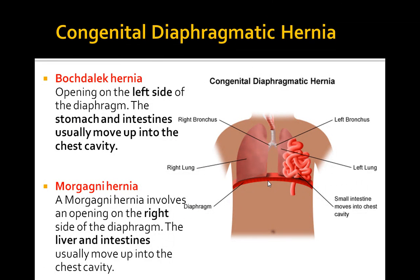There are two types. The Bochdalek hernia is mainly an opening on the left side of the diaphragm, where the stomach and intestines usually move up into the chest cavity. The Morgagni hernia involves an opening on the right side of the diaphragm, where the liver and intestines usually move up into the chest cavity. The key thing to remember: the left-sided one is the Bochdalek hernia, and the right-sided one is the Morgagni hernia.